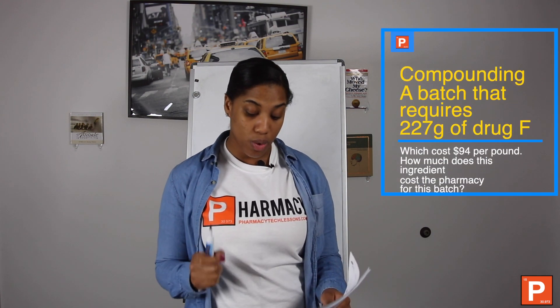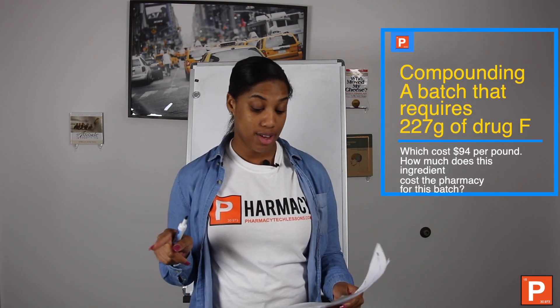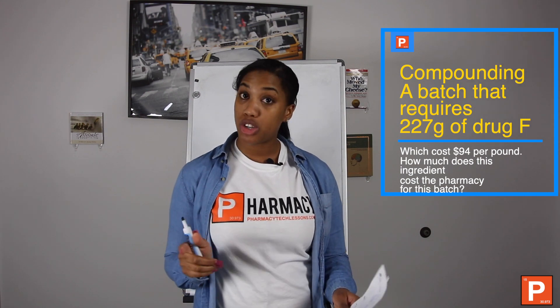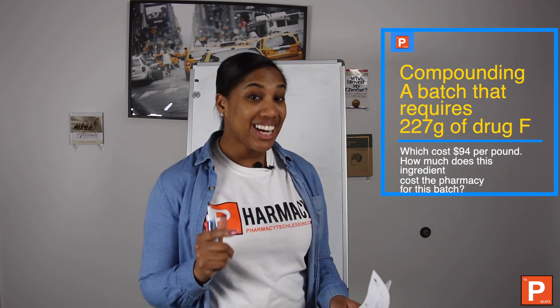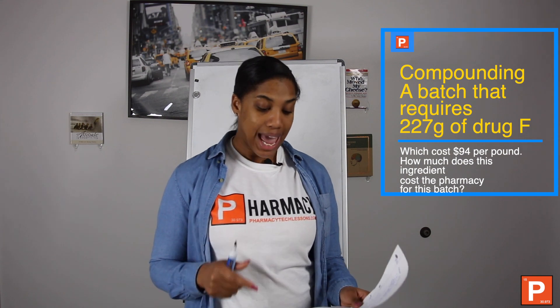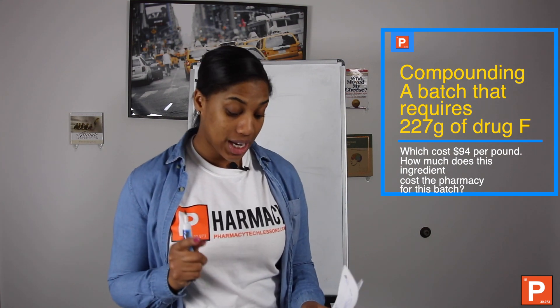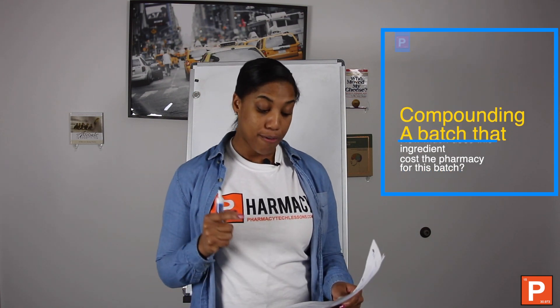Alright, so here we are with another math solution. Now let's talk about this particular problem. I want you to follow with me very carefully - we don't want to miss any details. So this problem reads: you are compounding a batch that requires 227 grams of drug F, which costs your pharmacy $94 per pound. How much does this ingredient cost the pharmacy for this batch?